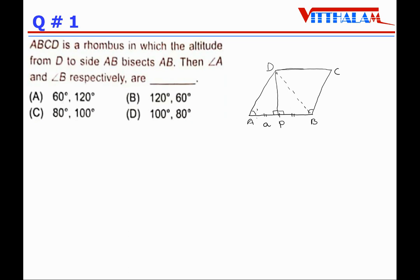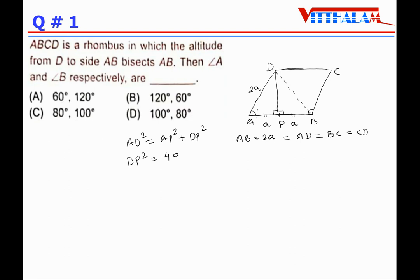Let us take AP = a, therefore AB = 2a. Since ABCD is a rhombus, all sides are equal, so AD = BC = CD = 2a. Now let us find DP using the Pythagorean theorem: AD² = AP² + DP², therefore DP² = AD² − AP² = 4a² − a² = 3a², so DP = √3·a.